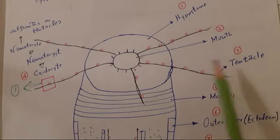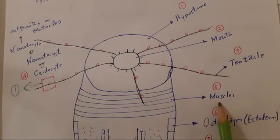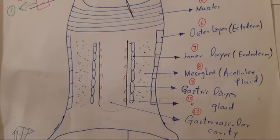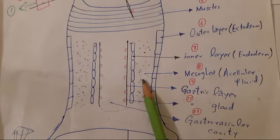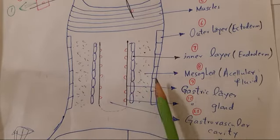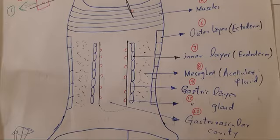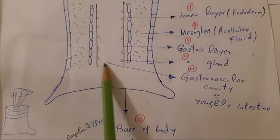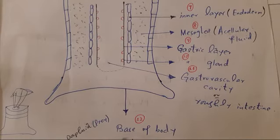Here is a closer view of the diagram. The parts are: the hypostome, the mouth, tentacles, the cnidocyte, muscles, the outer layer — ectoderm, inner layer — endoderm, mesoglia between the outer and inner layers, the gastric layer, the gastric gland, the gastro-vascular cavity or roughly intestine, and finally the base of the body.